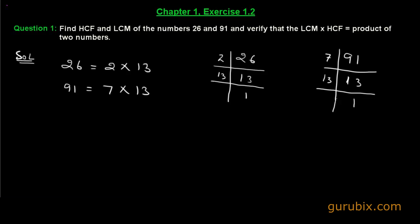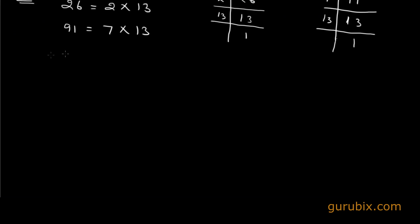Now it is very easy to find the HCF of these two numbers. HCF means highest common factor, and we see that 13 is common in the factors of both numbers. So 13 is the HCF.